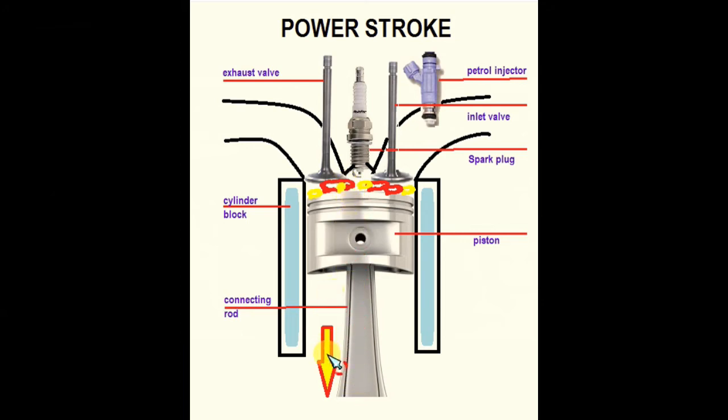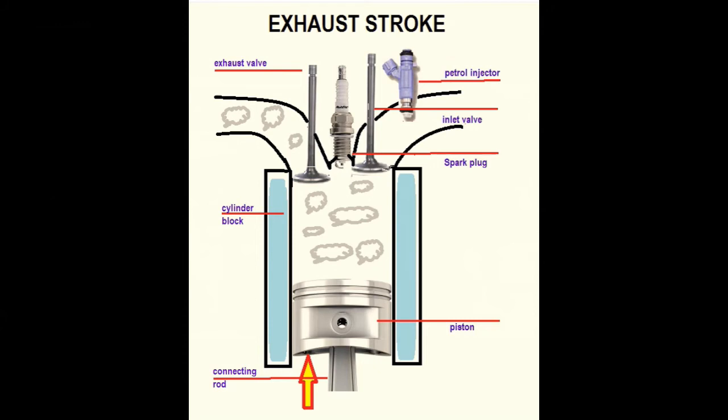The fourth stroke is the exhaust stroke. In this stroke, the exhaust valve is open and the inlet valve is in closed position. Again, the piston moves upward and exhaust gas discharges through the exhaust manifold.